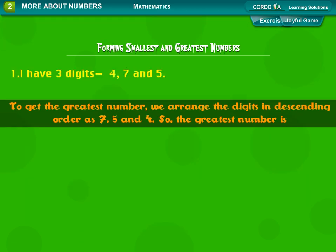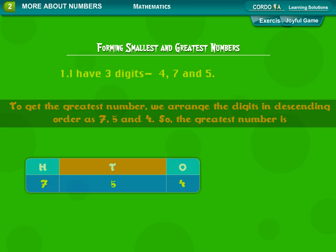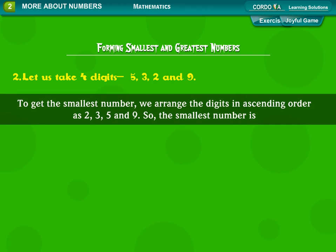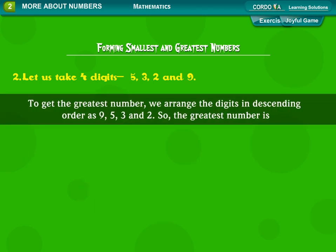To get the greatest number, we arrange the digits in descending order as 7, 5, and 4. So the greatest number is 754. Let us take 4 digits: 5, 3, 2, and 9. To get the smallest number, we arrange the digits in ascending order as 2, 3, 5, and 9. So the smallest number is 2,359.